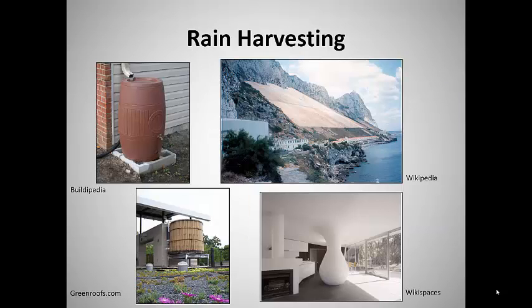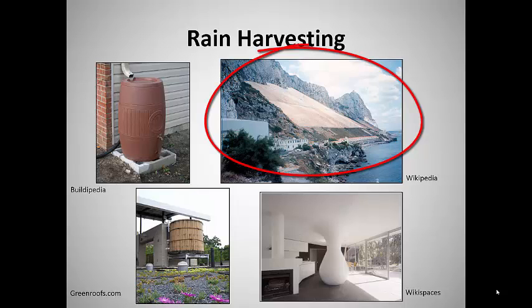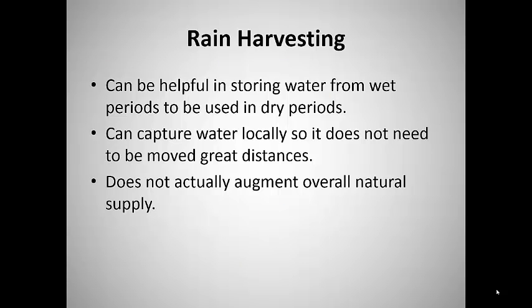Rain harvesting takes several forms, all of which aim to capture rain and snow locally before it evaporates, runs off, or infiltrates. One of the simplest forms is a rain barrel attached to a roof downspout. Some water-short communities, such as Gibraltar, have made use of large concrete or natural rock rain catchments. Rain harvesting can be helpful in storing modest amounts of water from wet periods so that it can be used during dry periods. Its big advantage is that it captures water at or near the point of use, so that it does not need to be transported long distances.